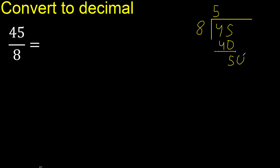Here, with point — 0 point. So 50. 8 multiplied by 6 is 48. 48 is not greater. 50 minus 48 is 2.